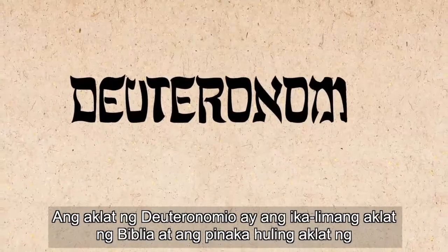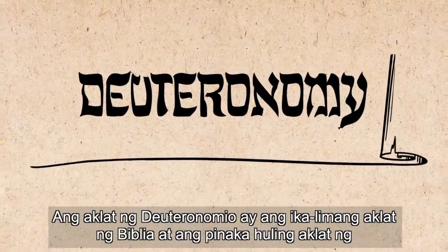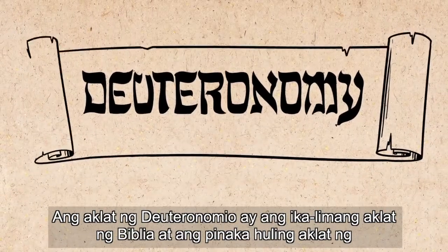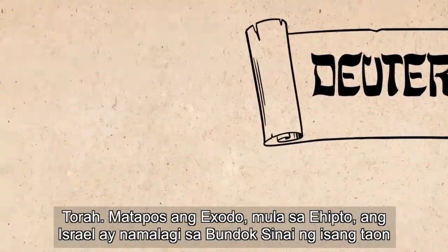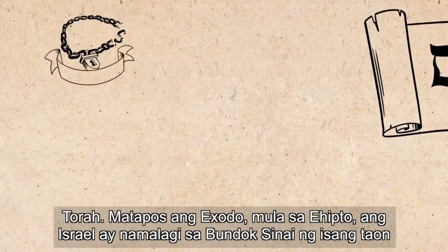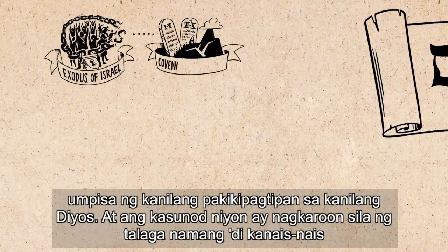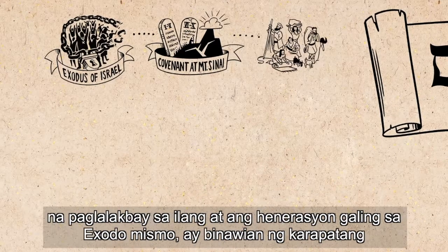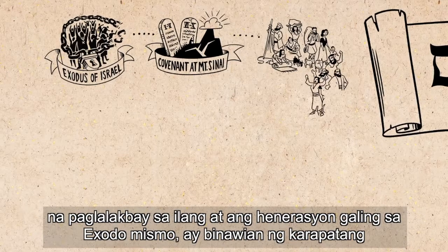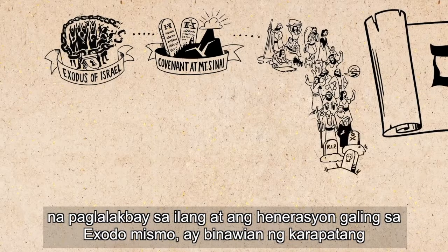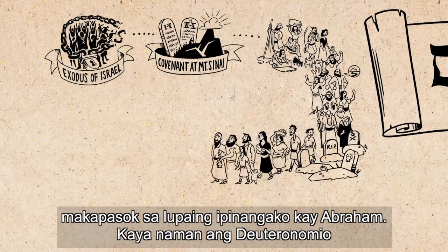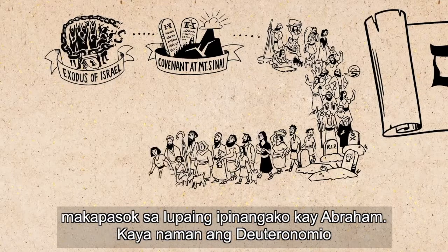The book of Deuteronomy is the fifth book of the Bible and the final book of the Torah. After the exodus from Egypt, Israel was at Mount Sinai for one year, entering into a covenant with their God. Then they had the disastrous road trip through the wilderness, and the exodus generation disqualified themselves from entering into the land promised to Abraham.